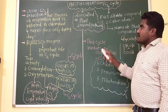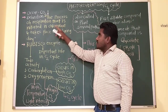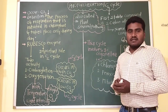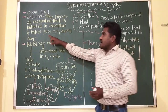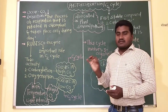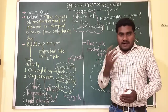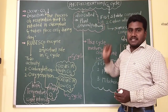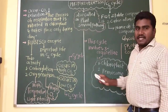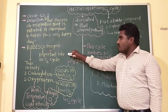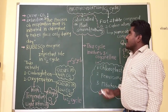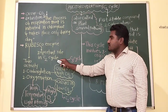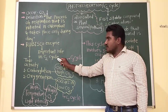What is the definition of photorespiration? The process of respiration that is initiated in the chloroplast and occurs only during daytime. In photorespiration, there is presence of the rubisco enzyme, which has an important role in the C2 cycle.